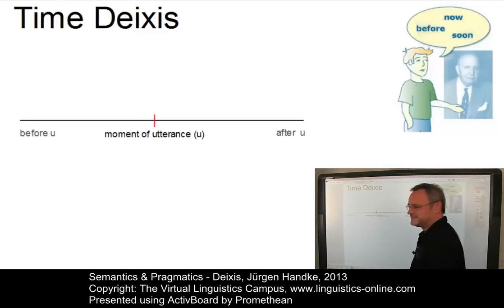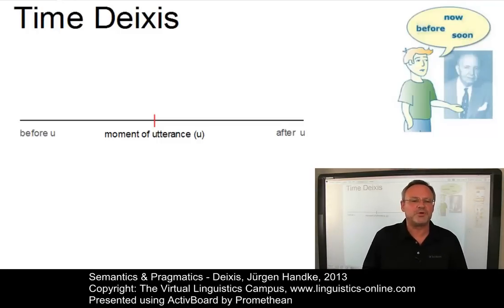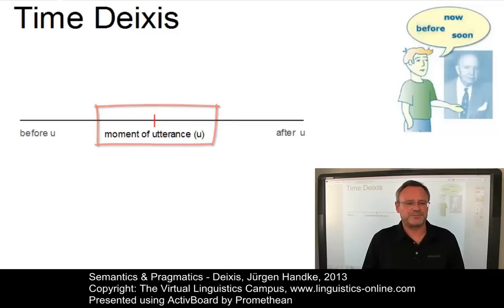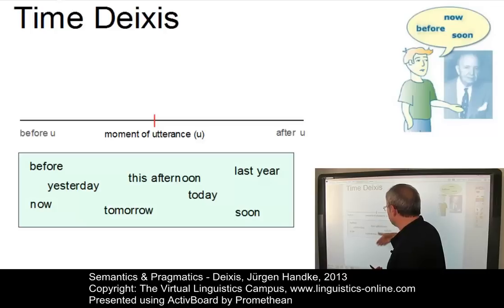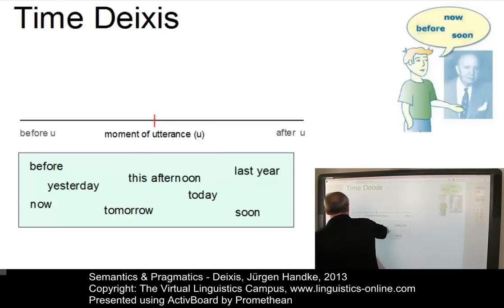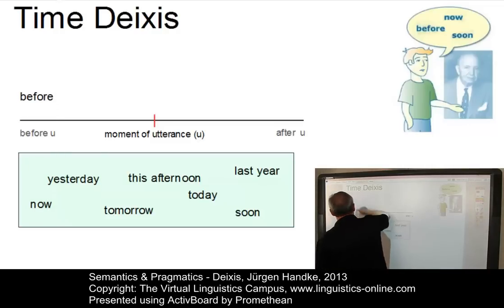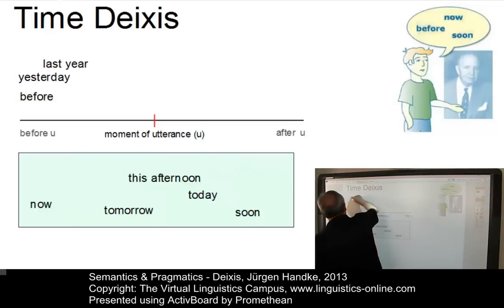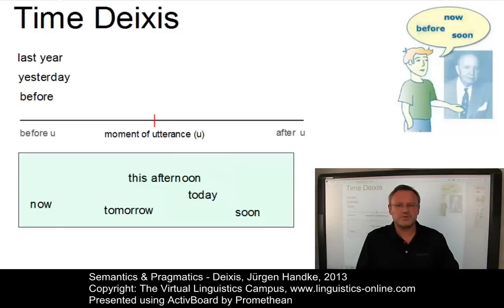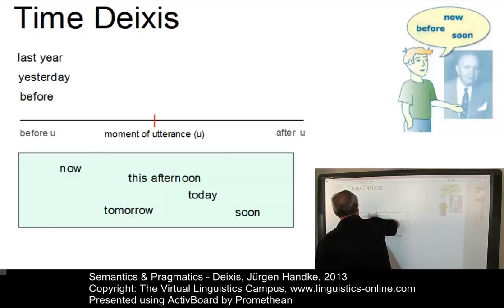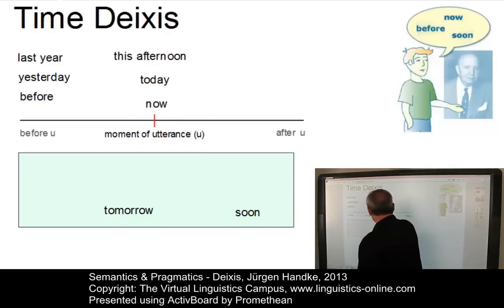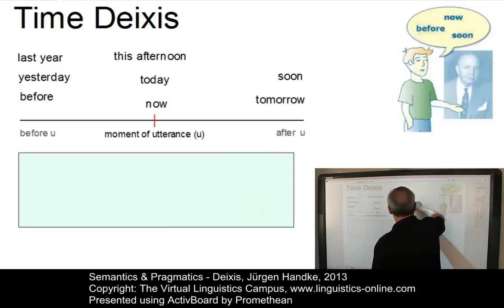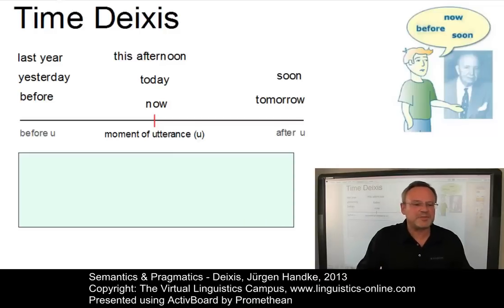Let's now look at time deixis. Deictic reference to time involves locating points or intervals on the time axis using the moment of utterance U as a reference point. We can identify elements used to denote an event that occurred before the moment of utterance — elements such as 'before', 'yesterday', or 'last year'. Then we have elements that denote the time of utterance itself, such as 'now', 'today', or 'this afternoon'. And elements such as 'tomorrow' or 'soon' relate to events that occur after the time of utterance.